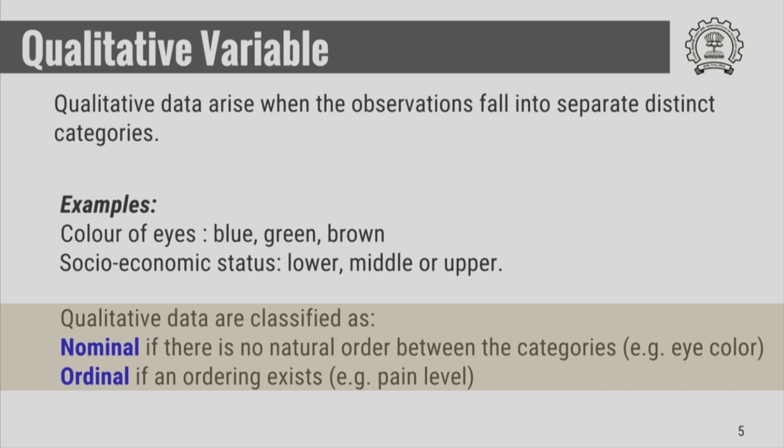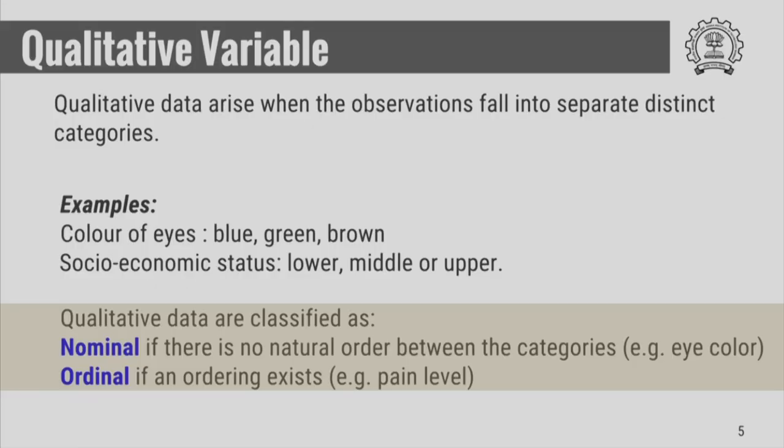For example, eye color is nominal data - you can arrange the eye colors blue, green, and brown in any order you want. There is no preference of one color over the other. Pain level is an example of ordinal data. The pain level can be low, medium, or severe, and therefore you can see that there is a natural order in the level of pain.